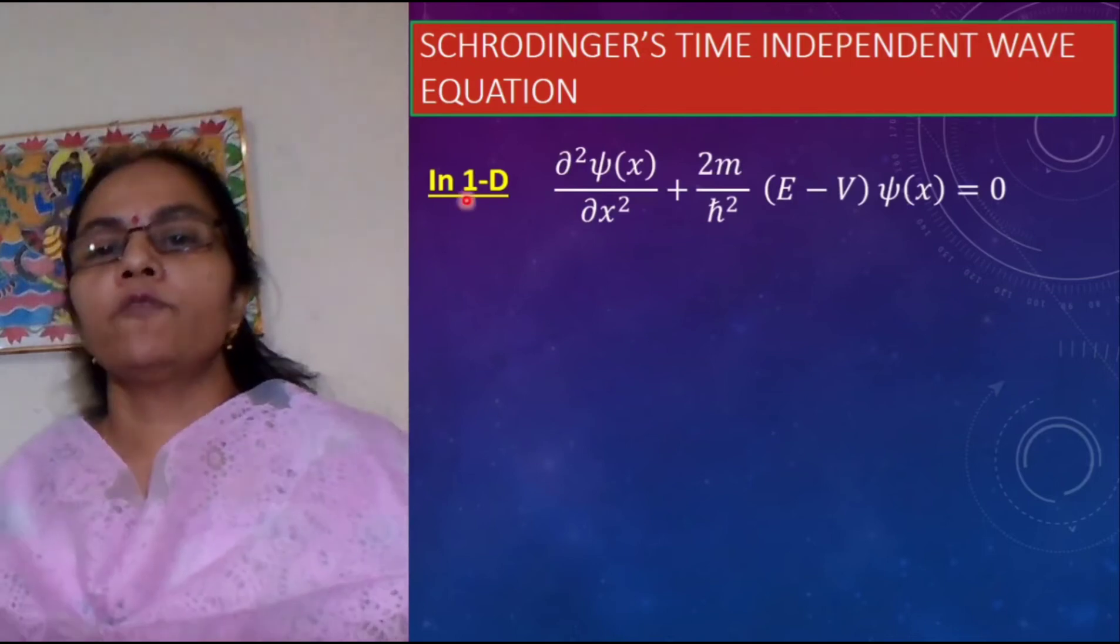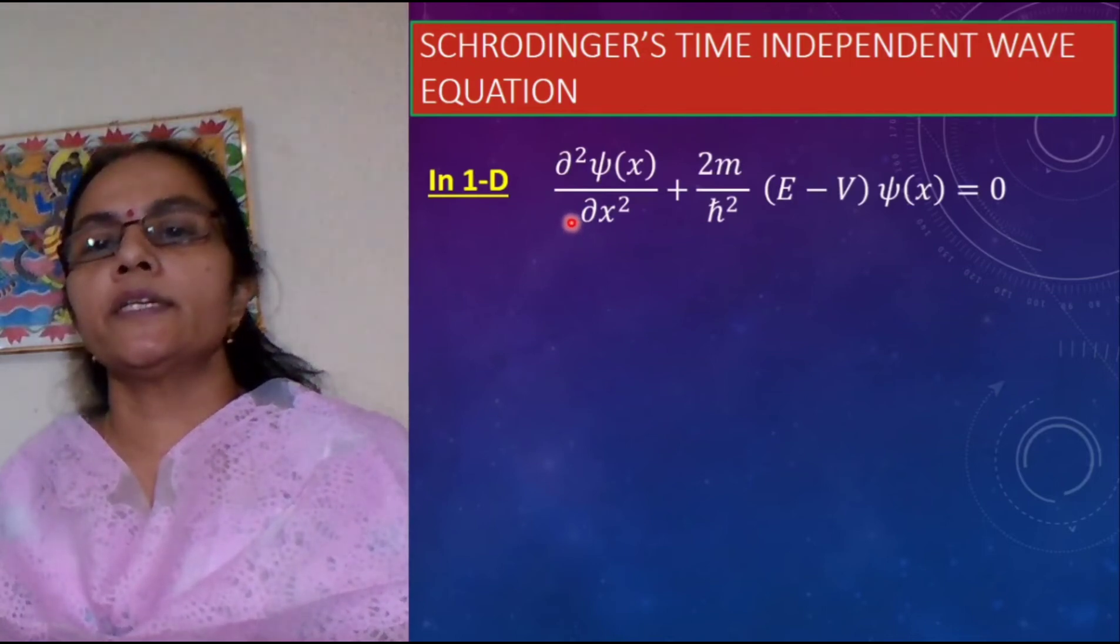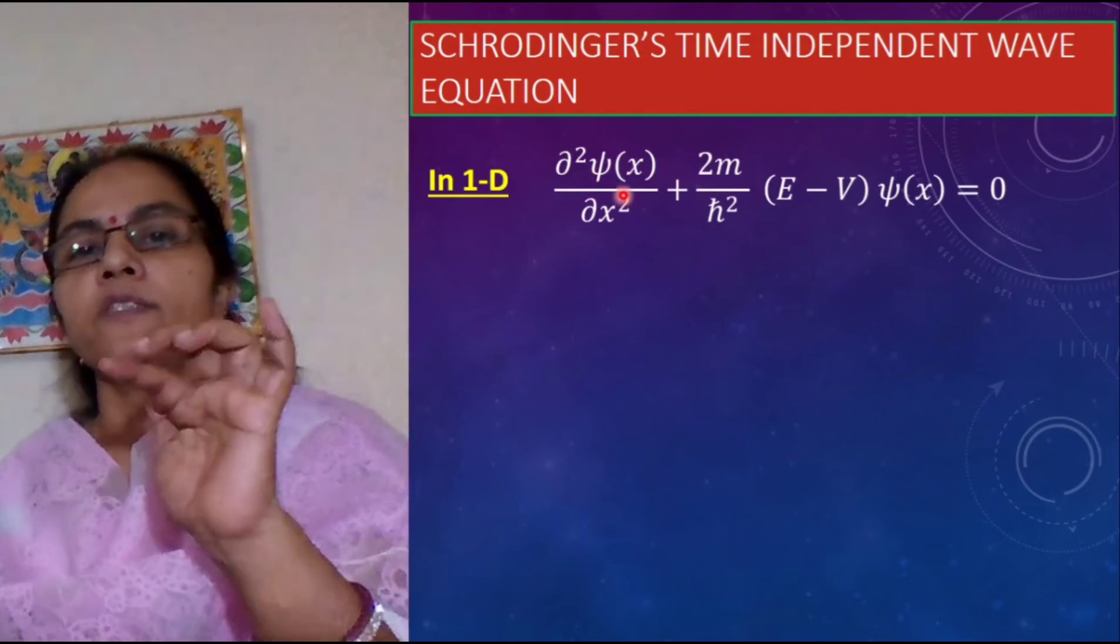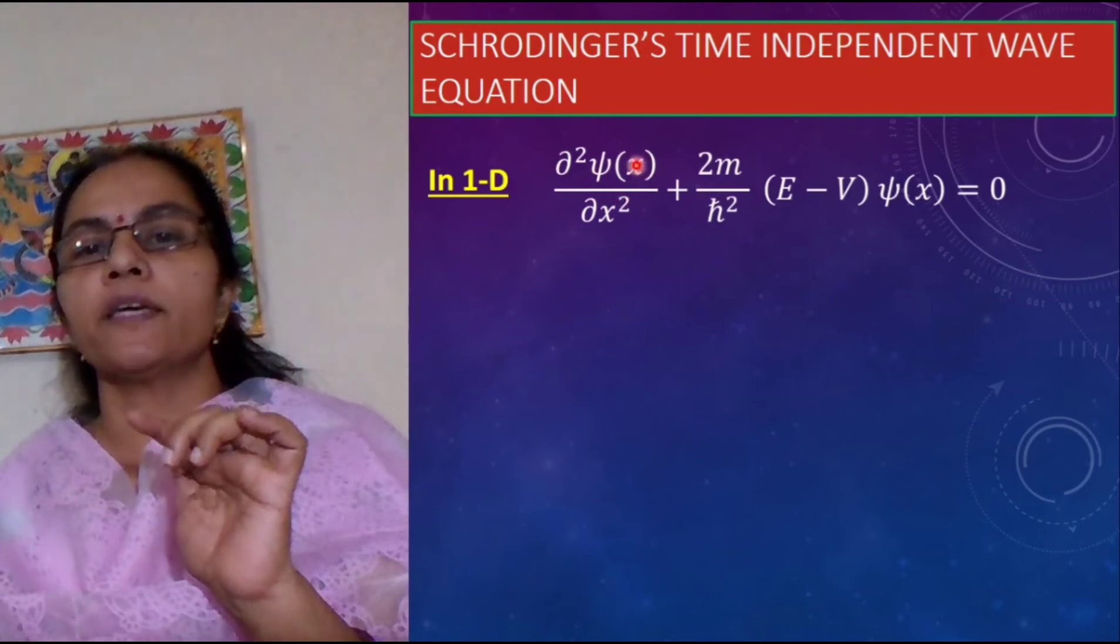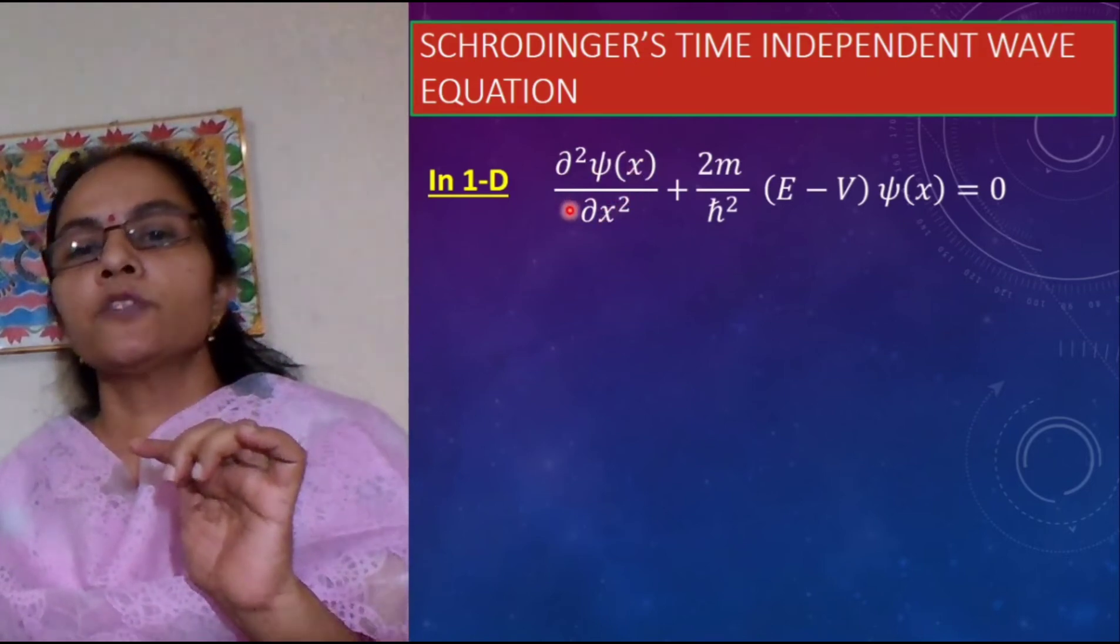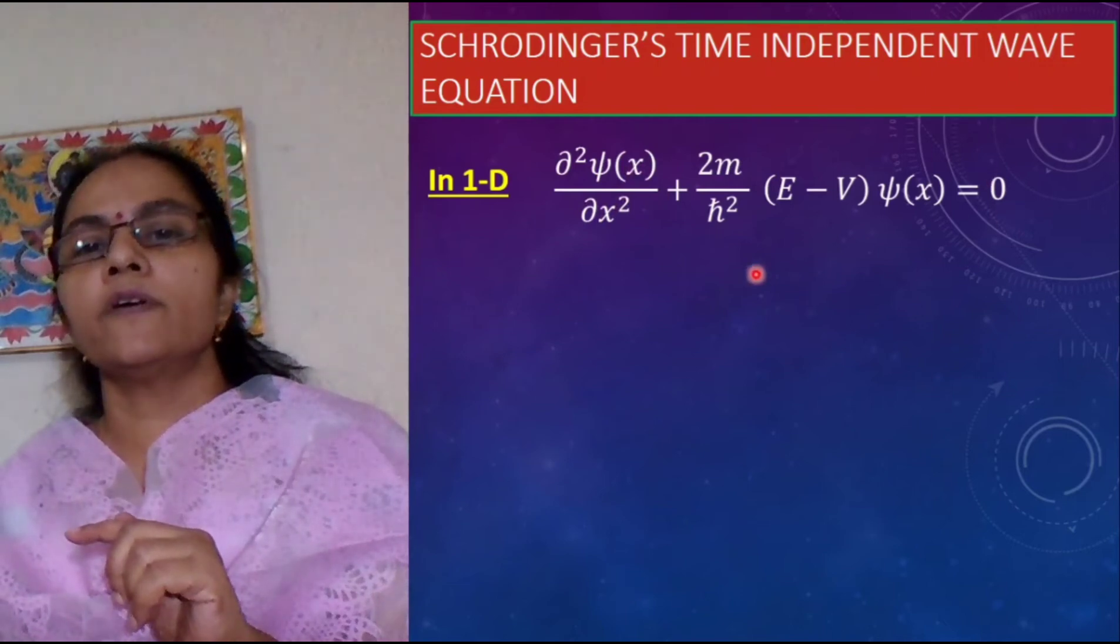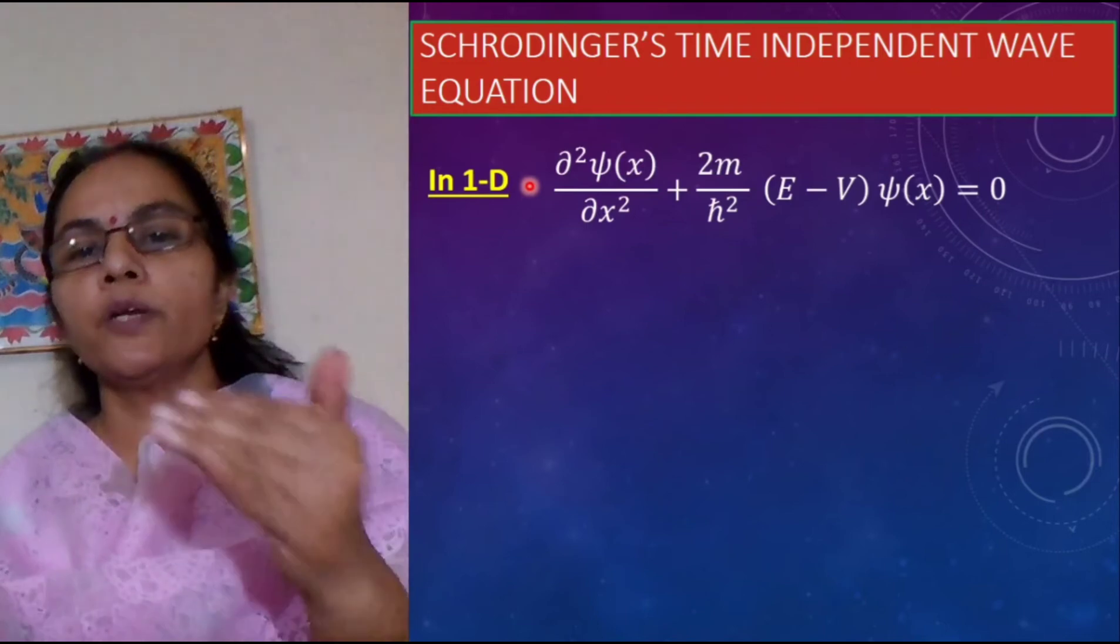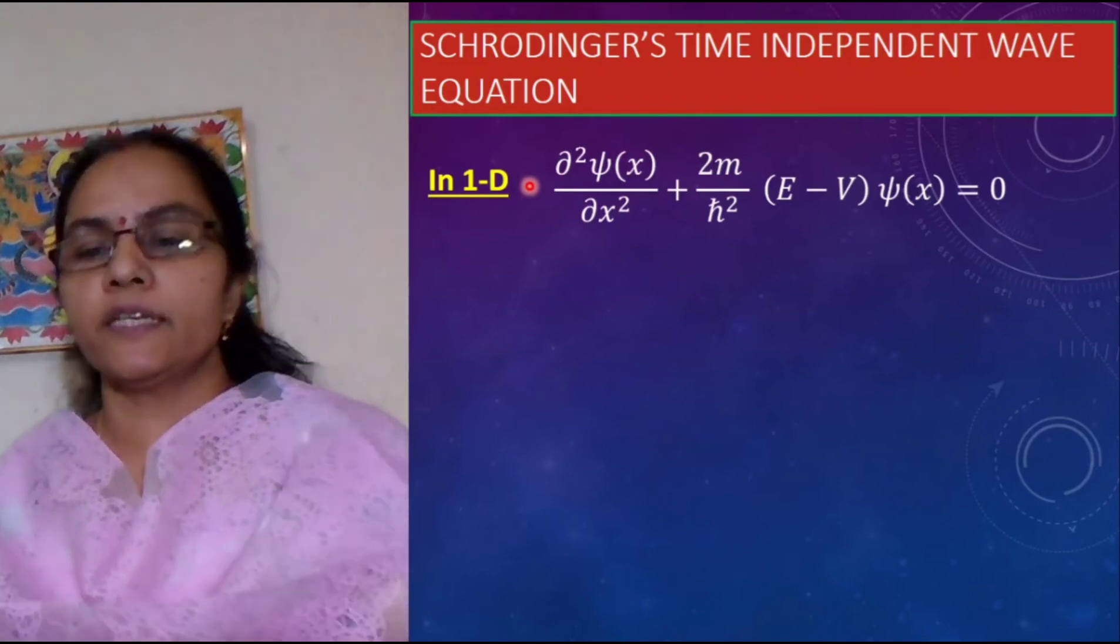So this is the one dimensional Schrodinger time independent wave equation. Here the particle is moving in a single direction, here I have taken it is in the x direction. So this is the one dimensional Schrodinger's time independent wave equation. We will do the derivation in the next class.